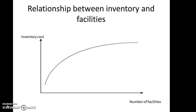The inventory cost must be included in the total expenses to deliver the product. The deciding factor here is the number of facilities. When you decide the number of facilities, you can estimate the inventory cost. In turn, the number of facilities is decided based on sales and demand for the product, as well as the desired response time for that product.